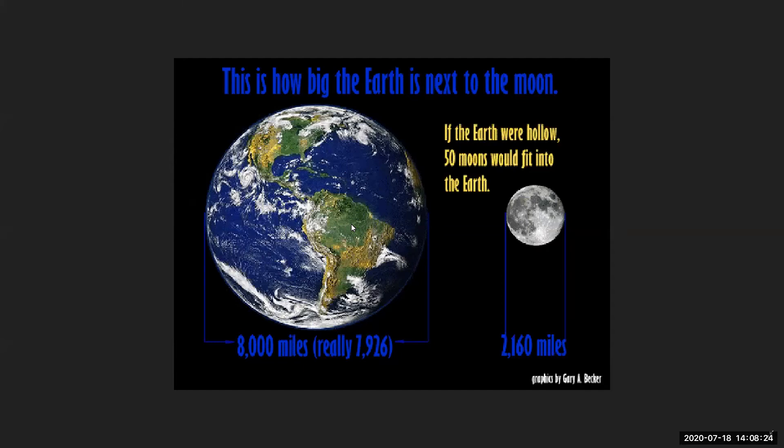In comparison, the moon is much smaller. We can put 50 moons inside the Earth. The largest planet in the solar system, Jupiter, is much bigger. The moon is about 8,000 miles wide, about the size of the United States.